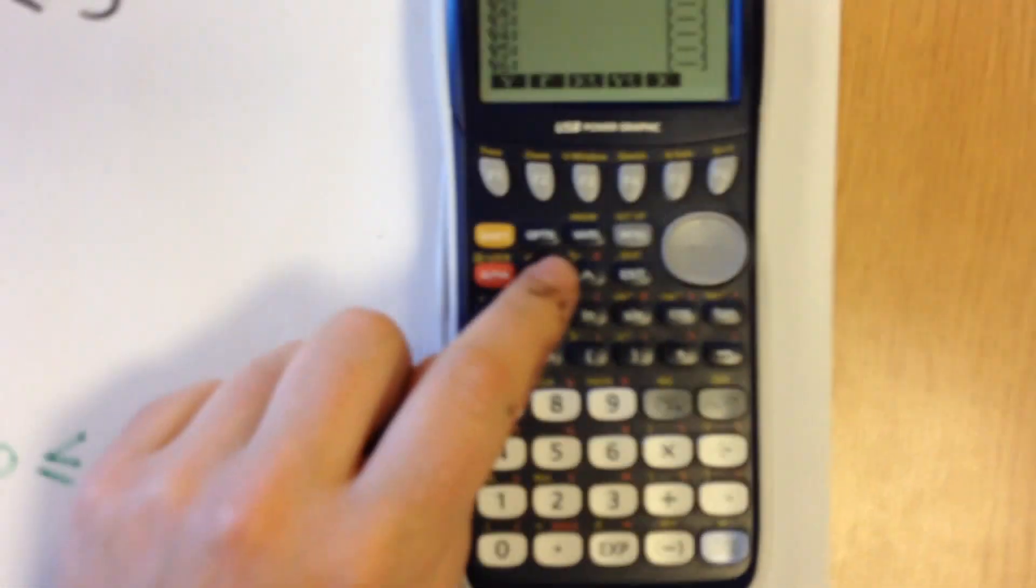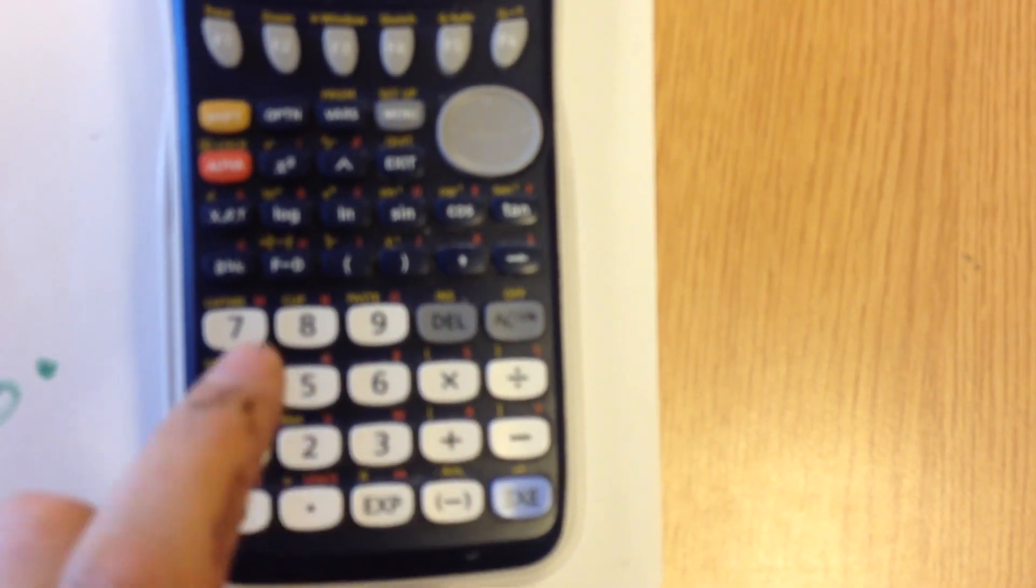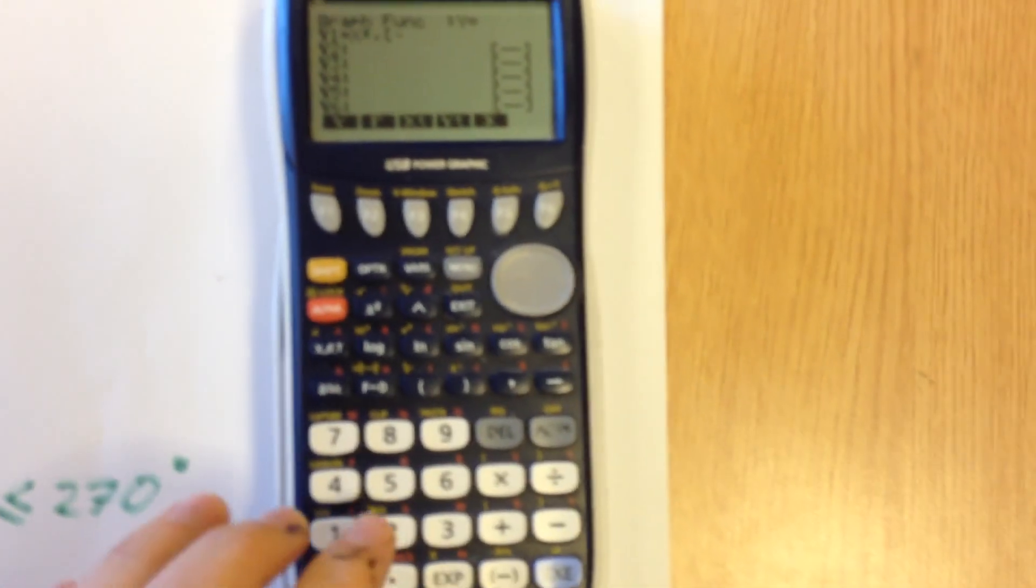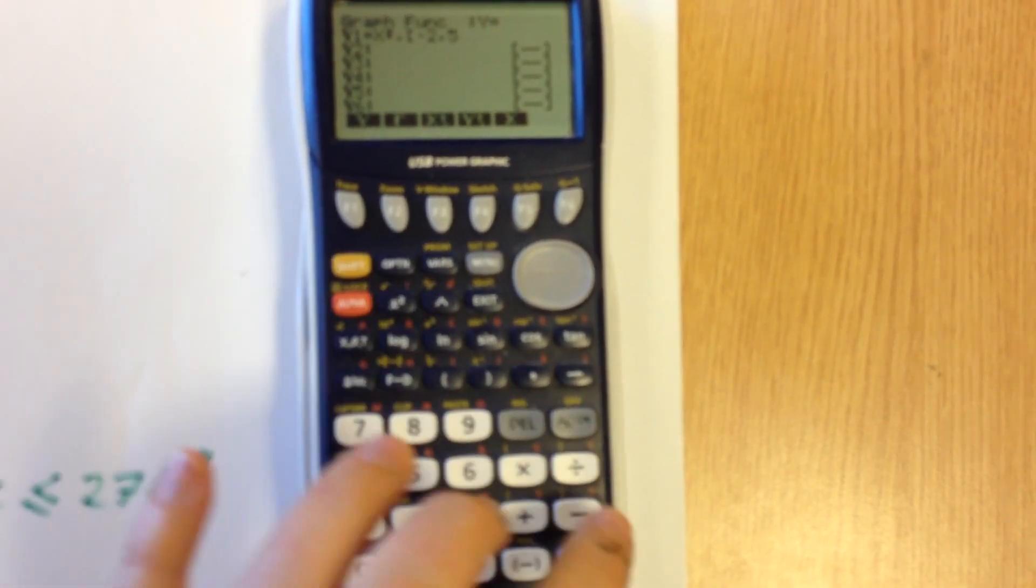It's really easy to do, so we do x squared and the domain bit is where we do a comma and we'll do square brackets. So it's going to be shift and plus to open the square bracket and then I type in my minus 2, comma 5 and then shift and close brackets.